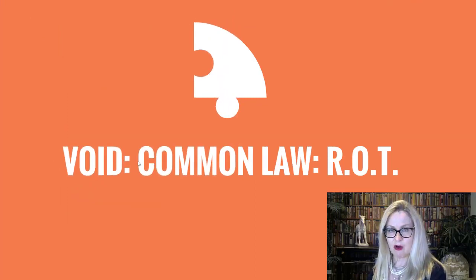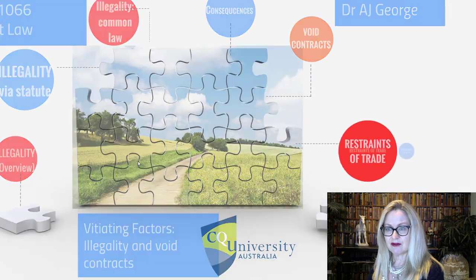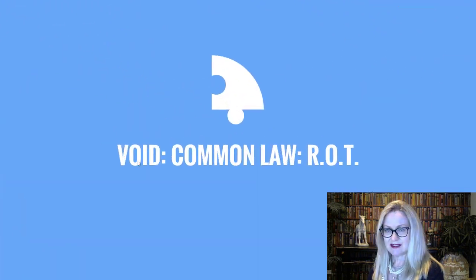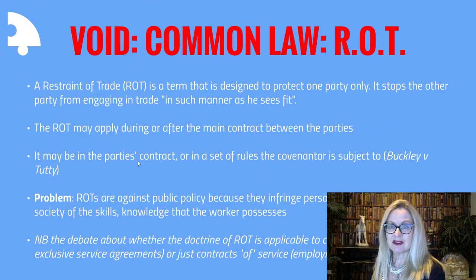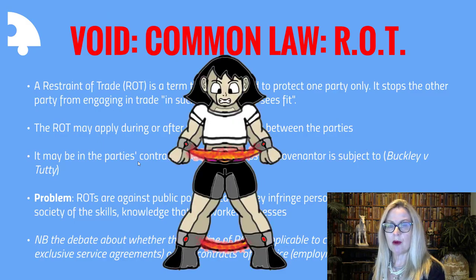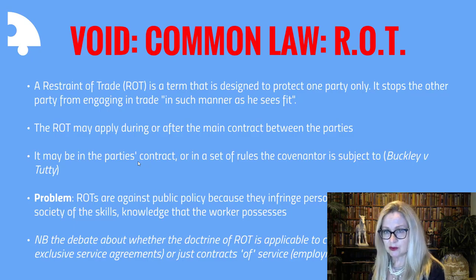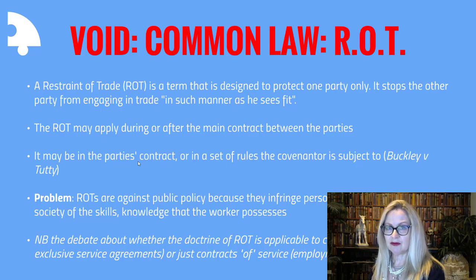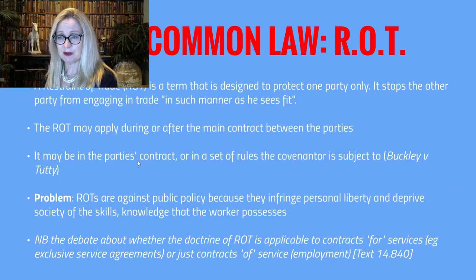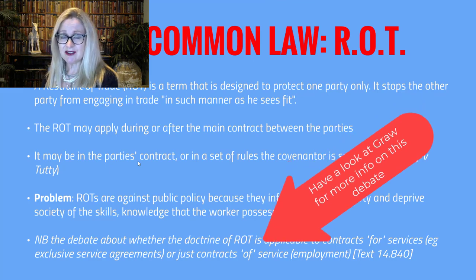The third and probably the largest category of contracts that might be void at common law for offending public policy are contracts in restraint of trade. A restraint of trade is a term that's designed to protect one party only — it stops the other party from engaging in trade in any fashion they see fit. The restraint may apply during or after the main contract between the parties, and it may be in the contract itself or in a set of rules that the covenantor is subject to, as in Buckley and Tutty. The problem is that restraints of trade are against public policy because they infringe personal liberties and deprive society of the skills, knowledge and expertise that the worker possesses.